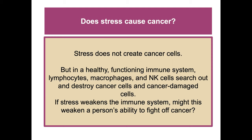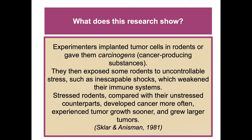Stress does not create cancer cells, but in a healthy functioning immune system, lymphocytes, macrophages, and NK cells search out and destroy cancer cells. If stress weakens the immune system, it may weaken a person's ability to fight off cancer. Experimenters implanted tumor cells in rodents and exposed some to uncontrollable stress such as inescapable shocks, which weakened their immune systems. Stressed rodents developed cancer more often, experienced tumor growth sooner, and grew larger tumors compared with unstressed counterparts.